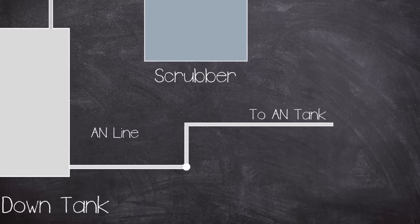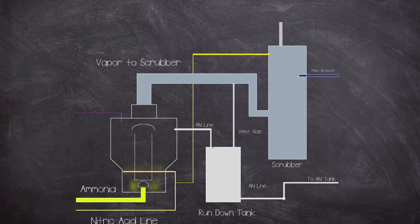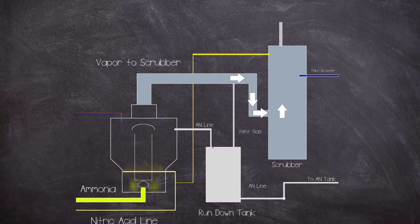The rundown tank was insulated with 2 inches of calcium silicate. Water vapour was vented to atmosphere via a scrubber, where any weak ammonium nitrate solution was returned to the neutralizer.